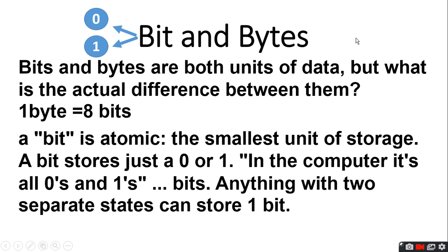Bit and byte — in dono me ye byte kya hai aur kya difference hai? Bit and a byte are both units of data. Dono hi data ki unit hai. One byte equals to 8 bits — wo 8 bit ke combination se milke bana hota hai. A bit is atomic, the smallest unit of storage. A bit stores just a 0 or a 1.